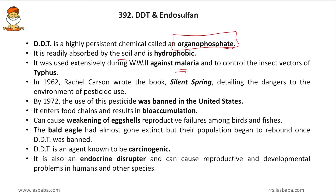In 1962, Rachel Carson wrote the book Silent Spring, detailing the dangers of DDT and explaining how bird populations were declining due to DDT consumption. In 1972, the use of this pesticide was banned in the US, and now it is banned by several nations because it is a persistent organic pollutant. It enters food chains and results in bioaccumulation and biomagnification.